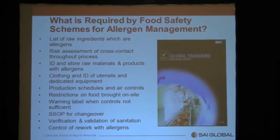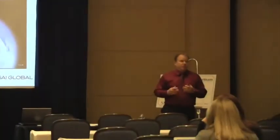BRC wants you to do a risk assessment not just of your raw materials, but of your entire facility — which is a good idea. BRC asks that you do a risk assessment of your entire process specifically for allergens. Where do you have potential for cross contact? Where do you have lines that cross over each other? Where do you have potential for aerosols, formulation issues? Identification and storage of raw materials and products with allergens is the same as SQF.